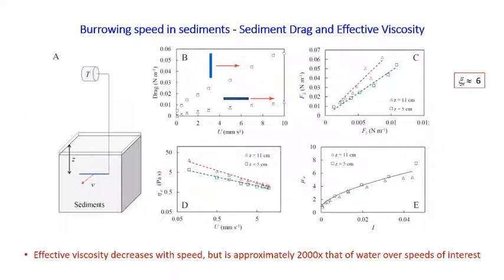But in sediment, not much was known about the drag ratio. So we measured it by dragging a rod through the same medium both parallel and perpendicular to its body axis. We found the drag is much greater when dragged perpendicular versus parallel. We also measured as a function of depth, finding a weak depth dependence, but the drag anisotropy was always greater than in water — varying between 5 and 7 as we varied depth from 5 to 11 centimeters, so we used a value of CR = 6.